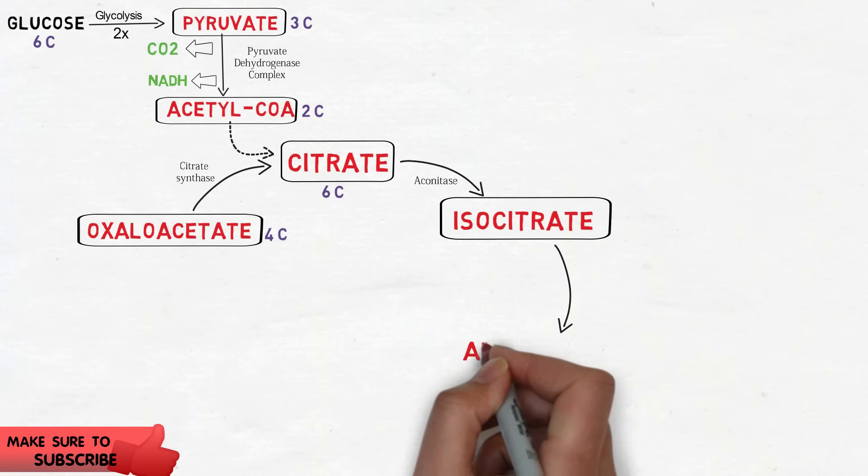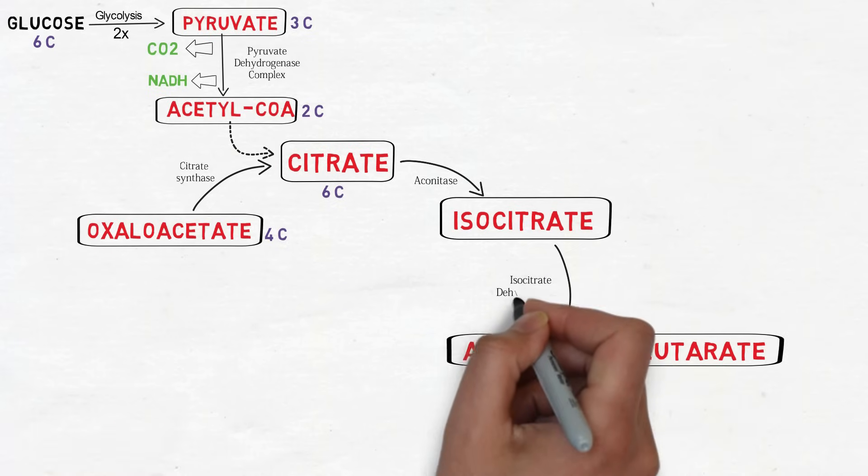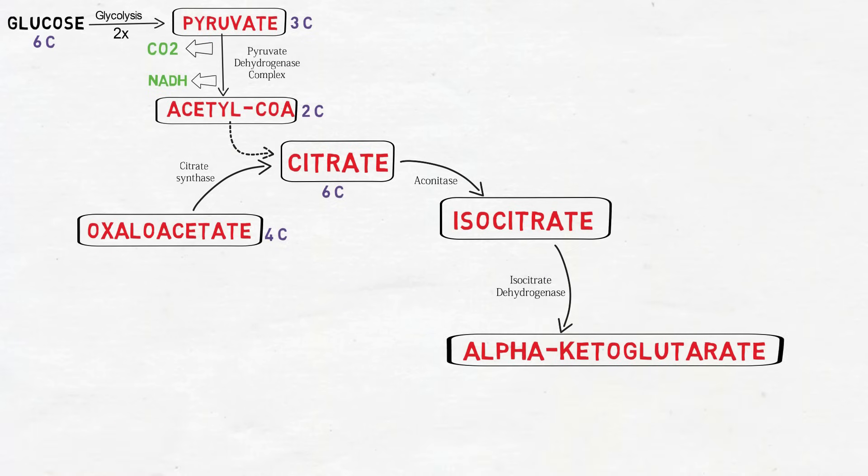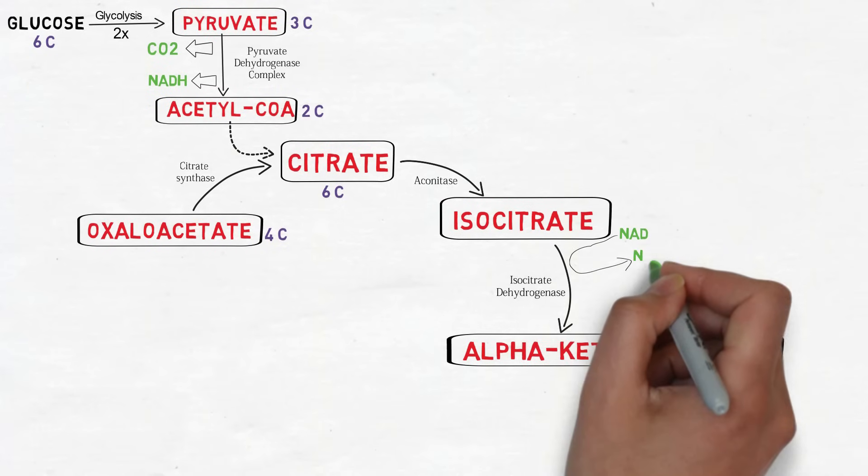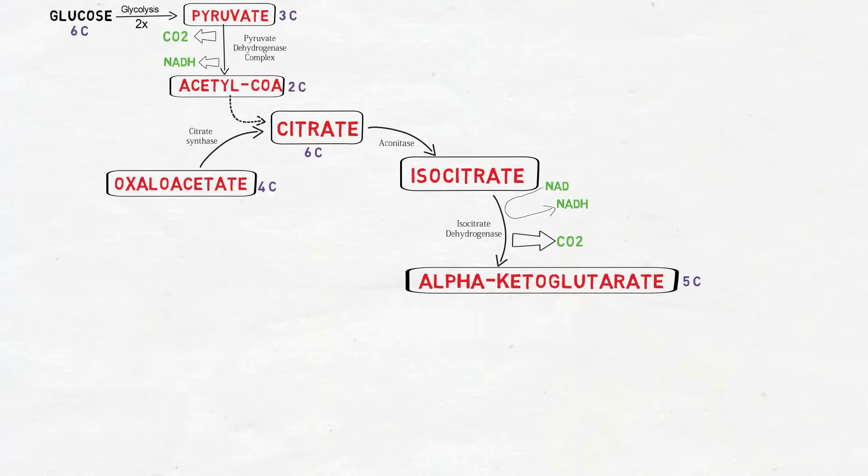The isocitrate is oxidized into alpha-ketoglutarate by the enzyme isocitrate dehydrogenase. In this reaction a molecule of NAD+ is reduced to NADH and a molecule of carbon dioxide is generated. Hence, the alpha-ketoglutarate is a 5-carbon compound since one molecule of carbon is lost as carbon dioxide.